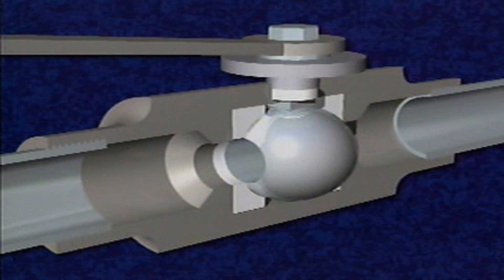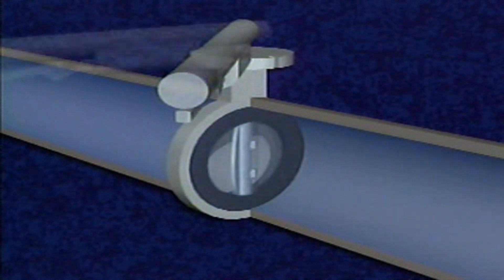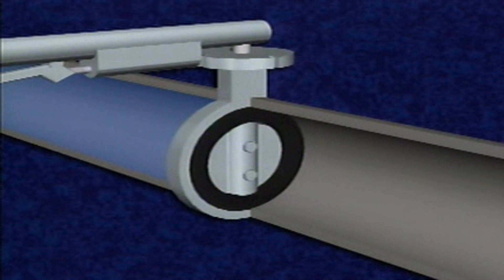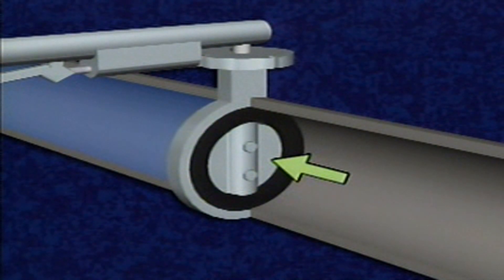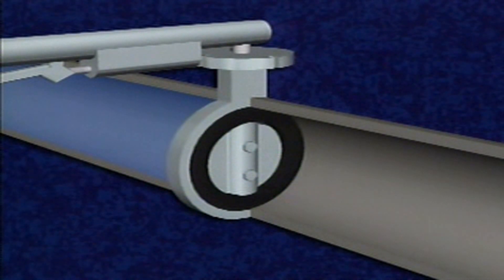Ball valves are commonly used for on-off applications. A butterfly valve also uses a disc that rotates. However, the disc in a butterfly valve does not have ports. Instead, the valve has a thin, flat, circular metal disc that is rotated to open or close the valve.